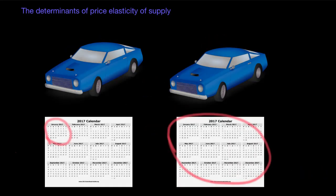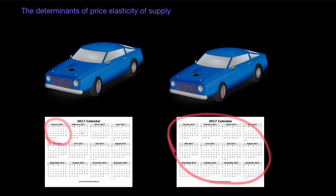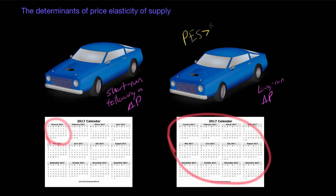We have one more determinant of price elasticity of supply. We've got cars on the left and cars on the right — the difference is the amount of time following a price change. On the right we have the long run: several months, even a year. Supply will be more elastic in the long run than in the short run. Over time, producers can be more responsive to price changes, allowing them to allocate more resources towards production following a price increase, or take resources out of production following a price decrease.